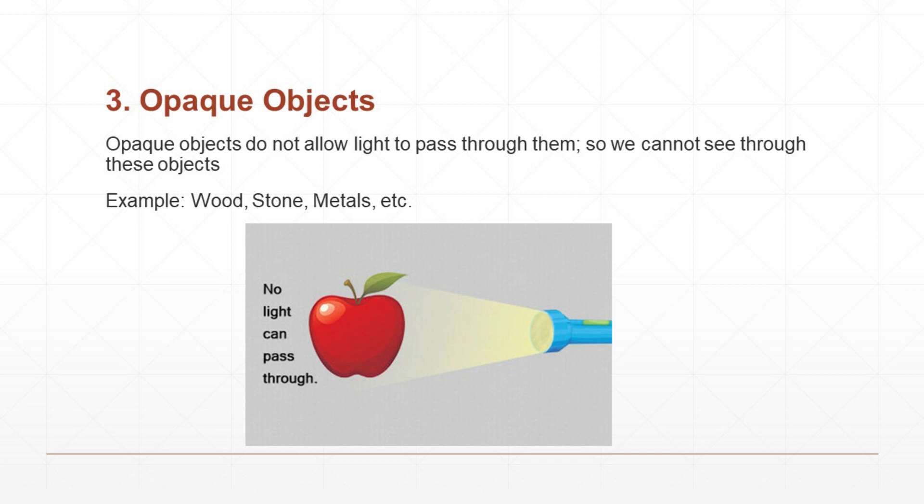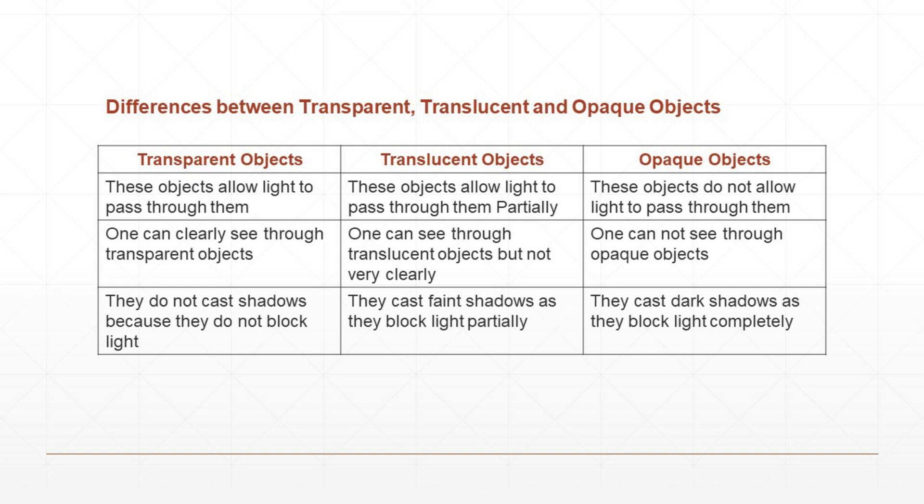Opaque objects do not allow light to pass through them, so we cannot see through these objects. Examples: wood, stone, metals, etc. Now, the differences: transparent objects allow all light to pass through them; translucent objects allow light to pass through them partially; opaque objects do not allow light to pass through them.